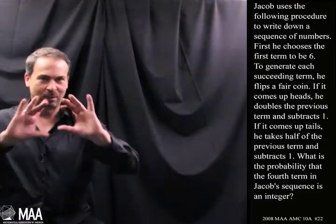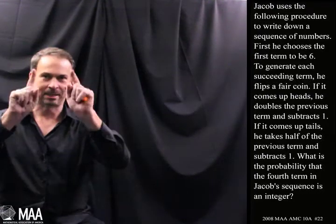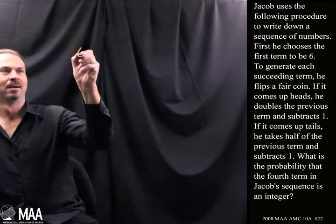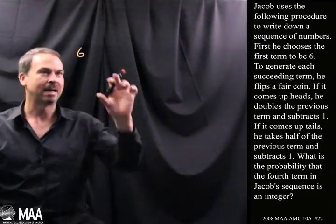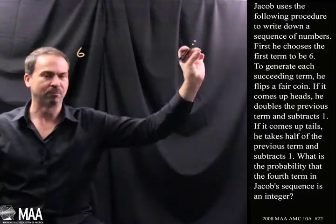So Jacob is doing something. He's writing down a sequence of numbers. He starts with the number 6. And then he flips a coin to get the next number in the sequence, the next number, the next number, and so on.